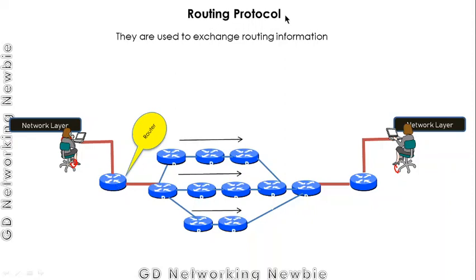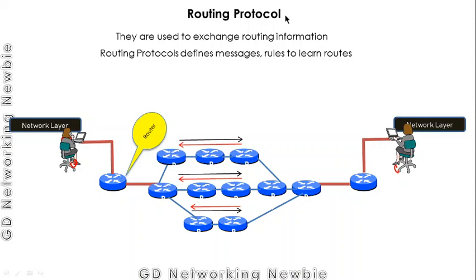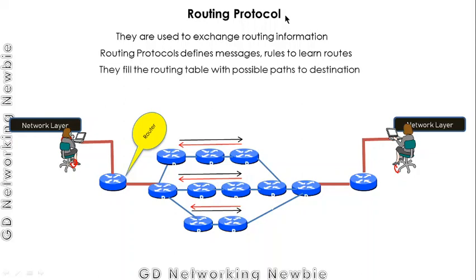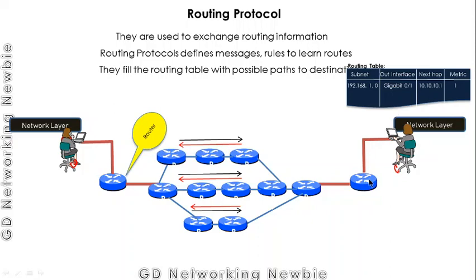With routing protocols, all routers exchange their routing information with each other about how to reach different destinations. Routing protocols define messages and rules to learn routes — which route to take and how many possible routes exist. These routing protocols fill up the routing table with possible paths to the destination. The routing table is in the memory of the router and contains information about different paths, and this information is filled by the routing protocol.